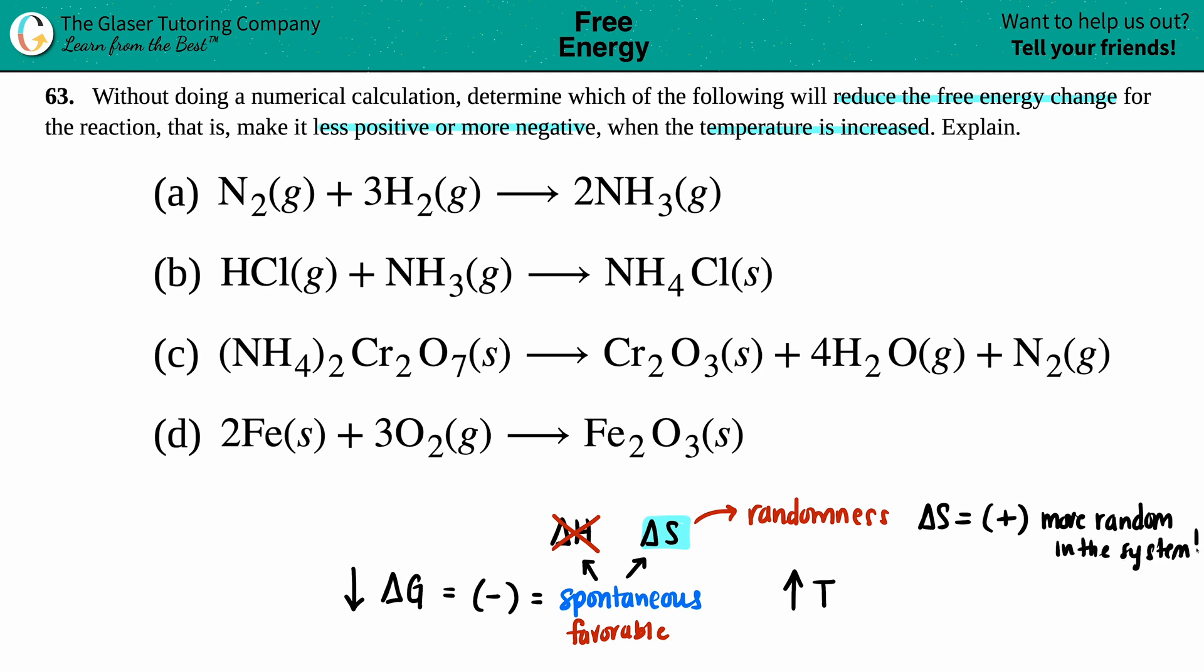But the only thing that they gave me was these balanced equations, but they gave me the states, and that's what I'm going to use. Because remember, if you're more random, if we're talking about states, that always means that a solid is going to a liquid, which goes to a gas. Gases are the most random out of the three states, and solids are the least.